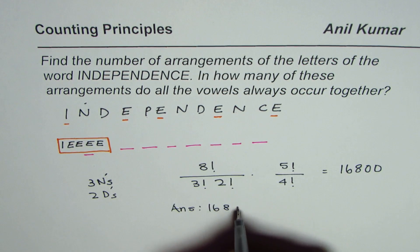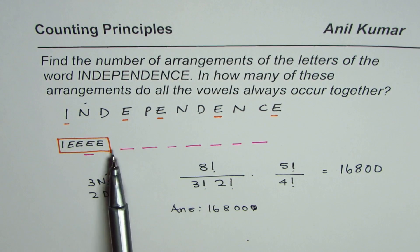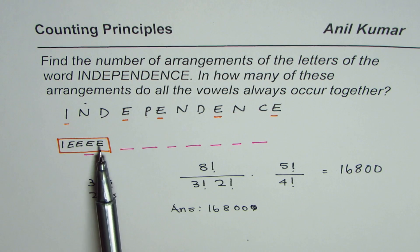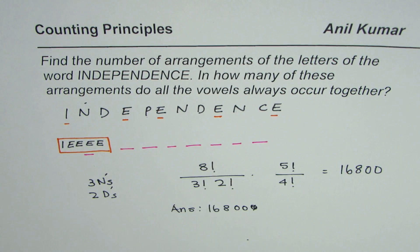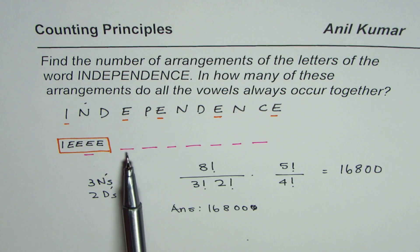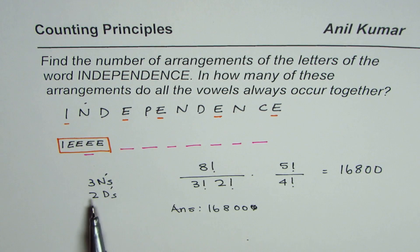So I hope the concept is clear to you. Combine all of them into one group. So we have eight places to work with, and that gives you eight factorial. Now, out of these eight places, out of these seven, we have three N's and two D's. And out of this vowel block, we can form a combination of five factorial over four factorial. That should be multiplied to get the answer. Thank you and all the best.